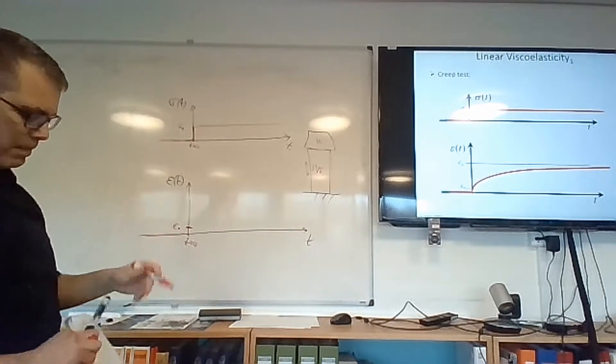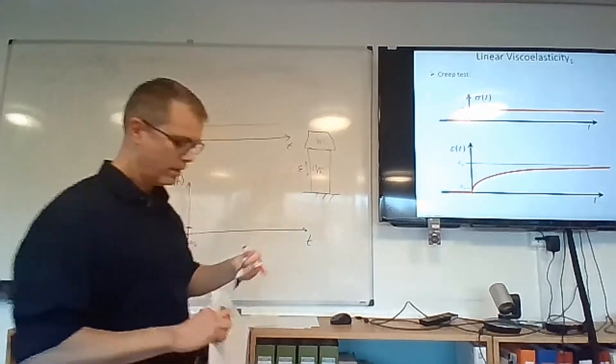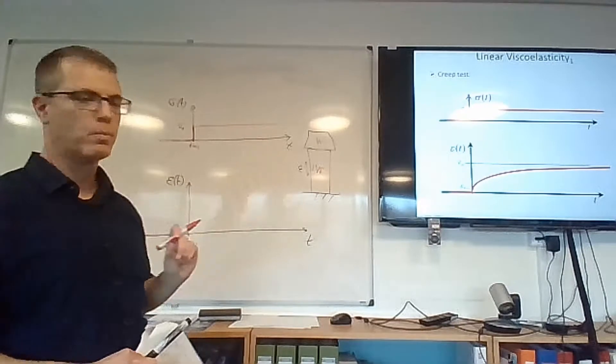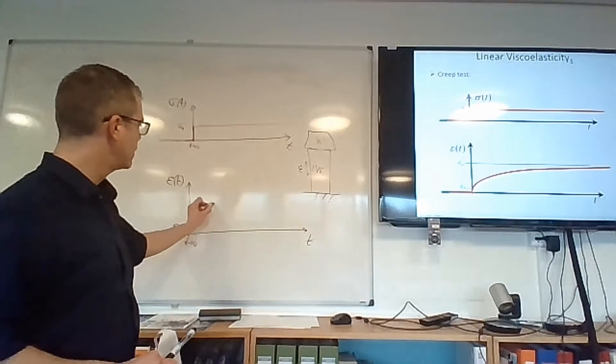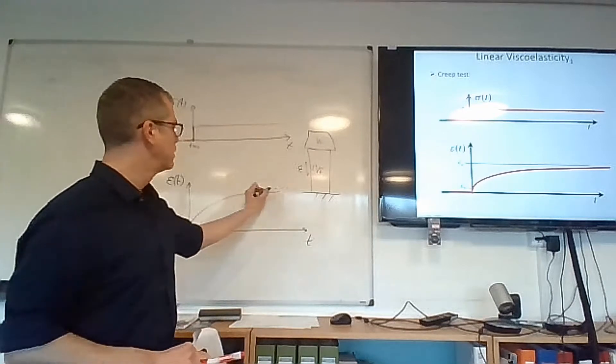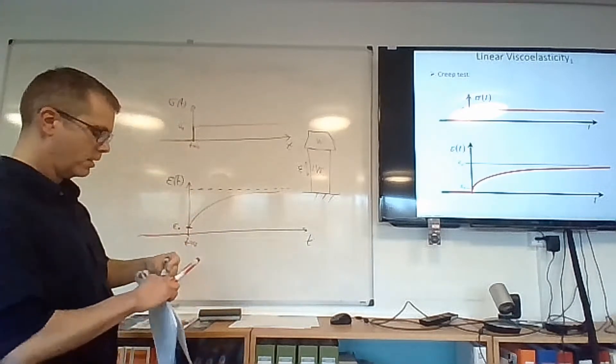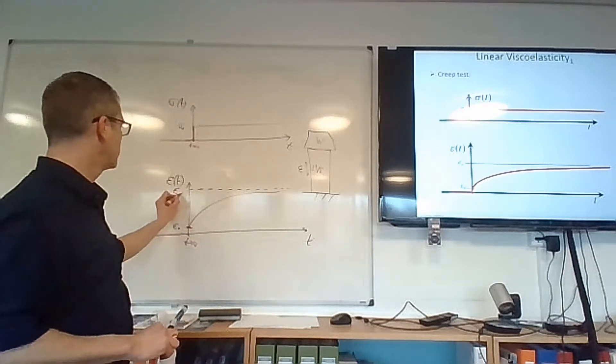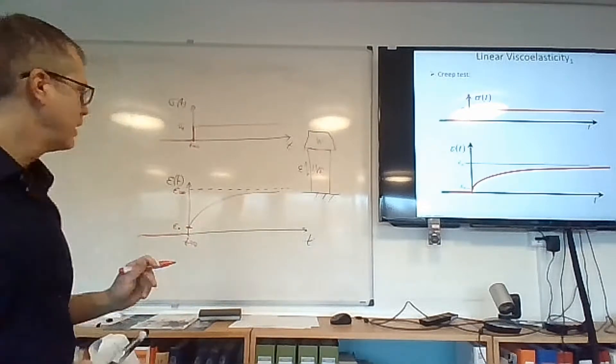And then, if we monitor the strain over time, again, the strain is the strain in the vertical direction, how this element is compressed. Then there is some kind of a behavior that looks like this. There is an asymptote at infinity. It seems that the material would stop deforming at infinite time, I mean, theoretically, infinite time. And that strain level, let's call it epsilon infinity.